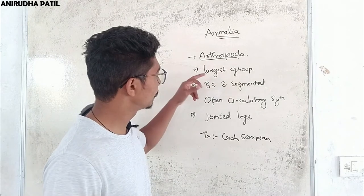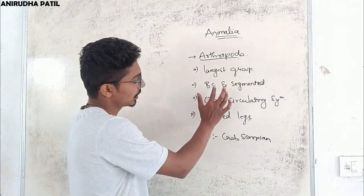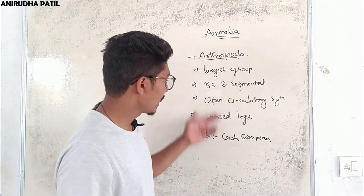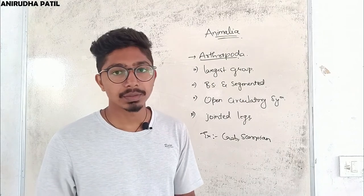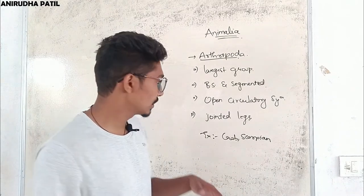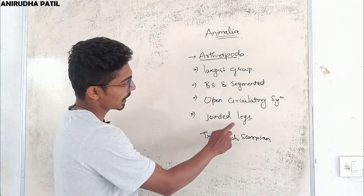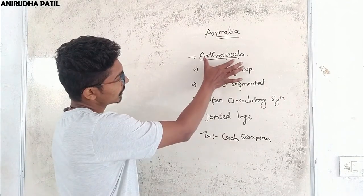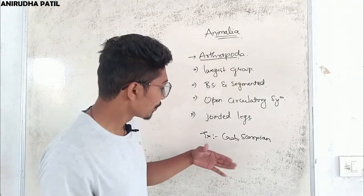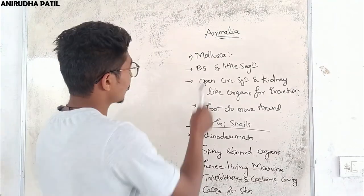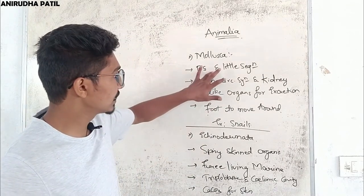The next group is Arthropoda, probably the largest group as it contains a lot of organisms. The body is bilaterally symmetrical and segmented. They have an open circulatory system, meaning there are no specific blood vessels for blood circulation. They have jointed legs — the name arthropod itself means jointed legs. Examples include crab and scorpion.